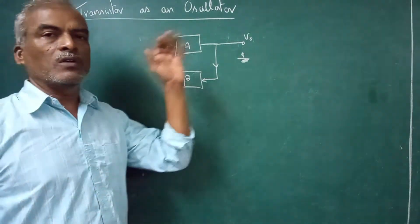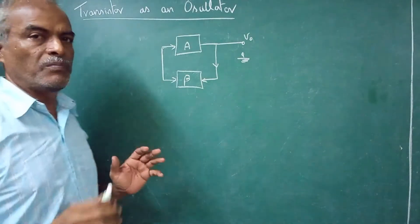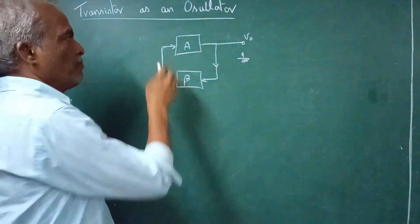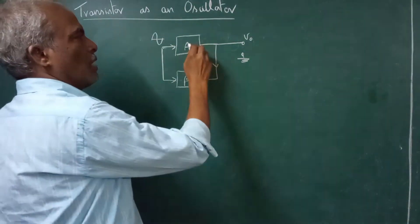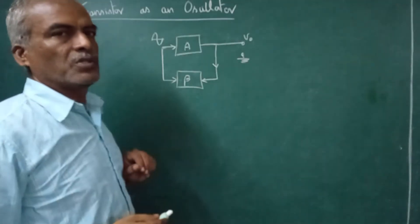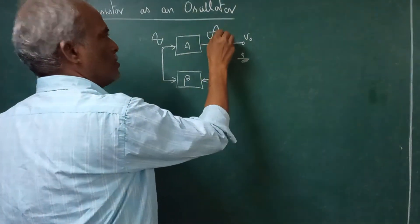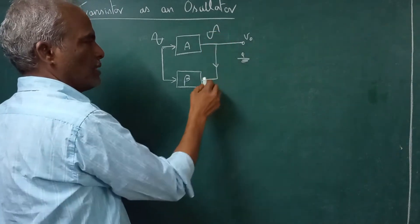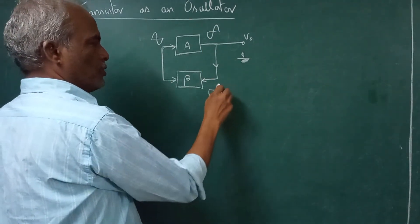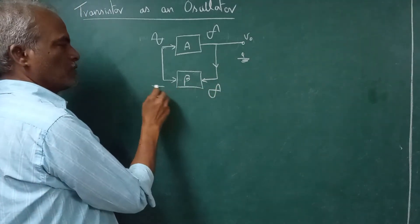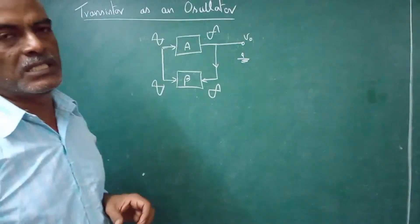The total phase shift around the loop must be integral multiples of 2π — that means it should be in-phase positive feedback. Assume the amplifier is introducing 180° phase shift — that is common emitter — so it will go like this, and this should introduce another 180° phase shift so that both are in phase. That is one condition.